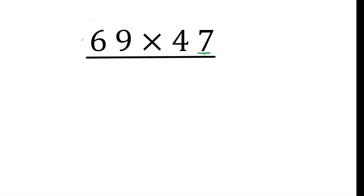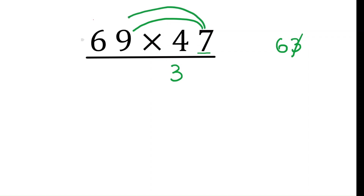Starting with 47, take the ones digit 7 and multiply with the ones digit of 69: 9 times 7 is 63. Write 3 in the answer and carry 6. Now multiply 7 with the tens digit 6: 7 times 6 is 42, plus carry 6 is 48. Write 48 in the answer.